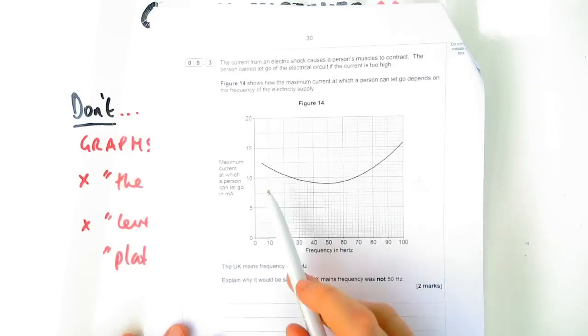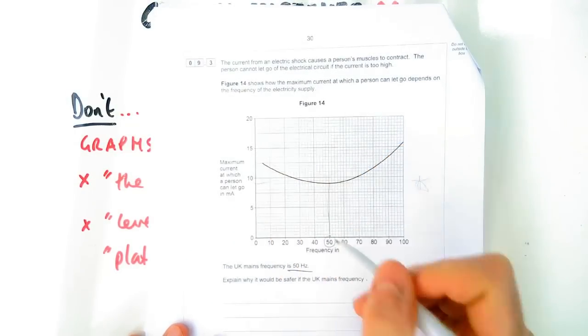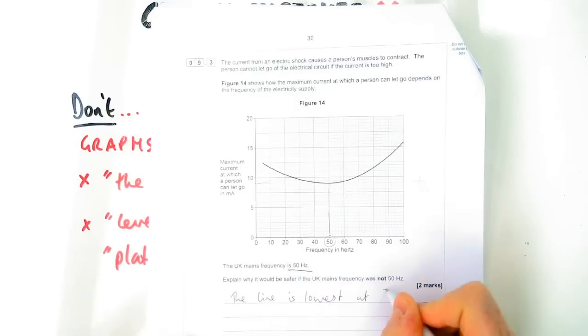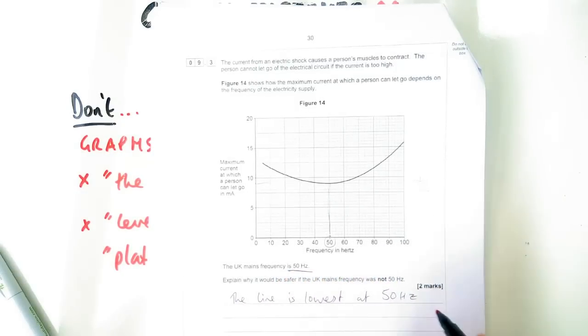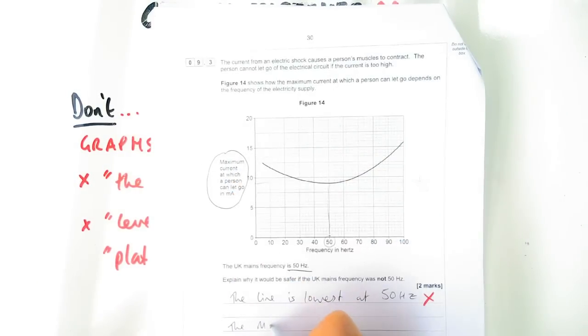So let's have a look at this graph question here. Now it's a curved graph that goes down in the middle. It talks about how the current varies with frequency, in particular maximum current. So you wouldn't just say the line is lowest at 50 hertz, because what is the line? The line represents this thing on the y-axis.